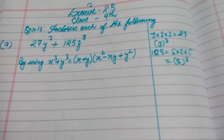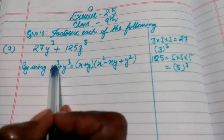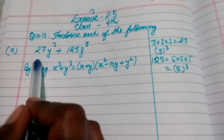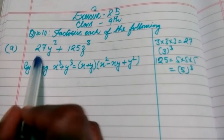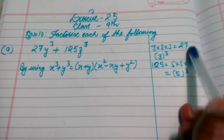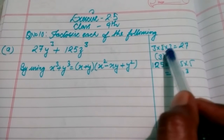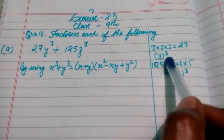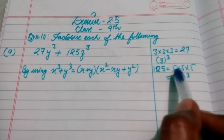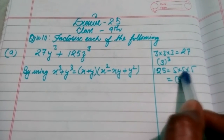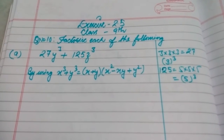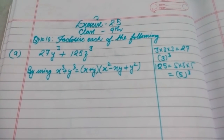First, we have to make the whole term a perfect cube. To do that, we factorize 27: we can write 27 as 3 × 3 × 3, which means 27 = 3³. Similarly, we can write 125 as 5 × 5 × 5 — since 5² = 25 and 5³ = 125 — so 125 can be written as 5³.